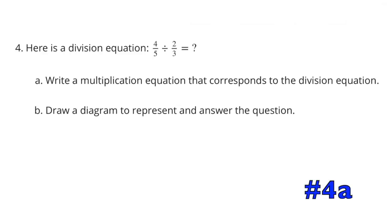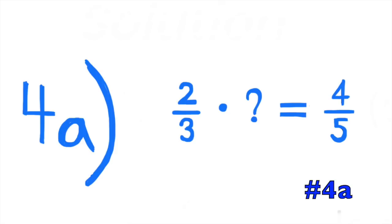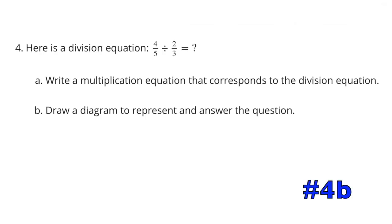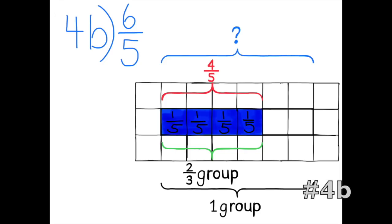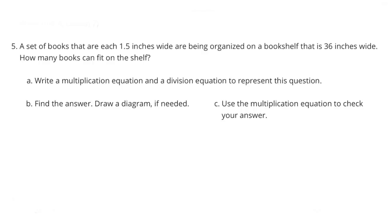Problem 4: Here is a division equation — four-fifths divided by two-thirds equals what number. Write a corresponding multiplication equation: two-thirds times what number equals four-fifths. Drawing a diagram: out of the four-fifths represented in the blue shaded area, another two-fifths is needed to form one full group. So the answer is six-fifths.